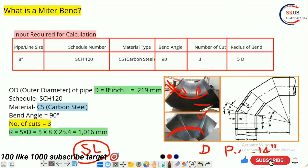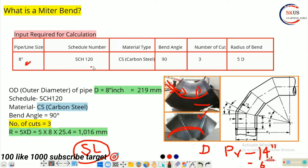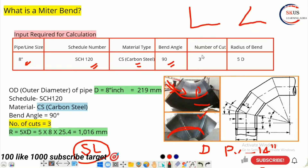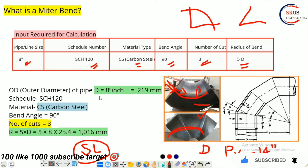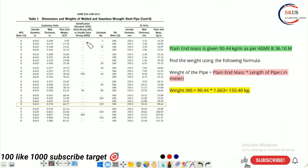Now we have to do the input. The information you need is: pipe size — how many inches; schedule number; material — carbon steel or something else; bend angle — 90° or 45°; number of cuts — for example, three; and radius of bend — here the radius is 5D. So for 8 inch pipe, refer to Table 1 — the outer diameter is 219.1 mm.